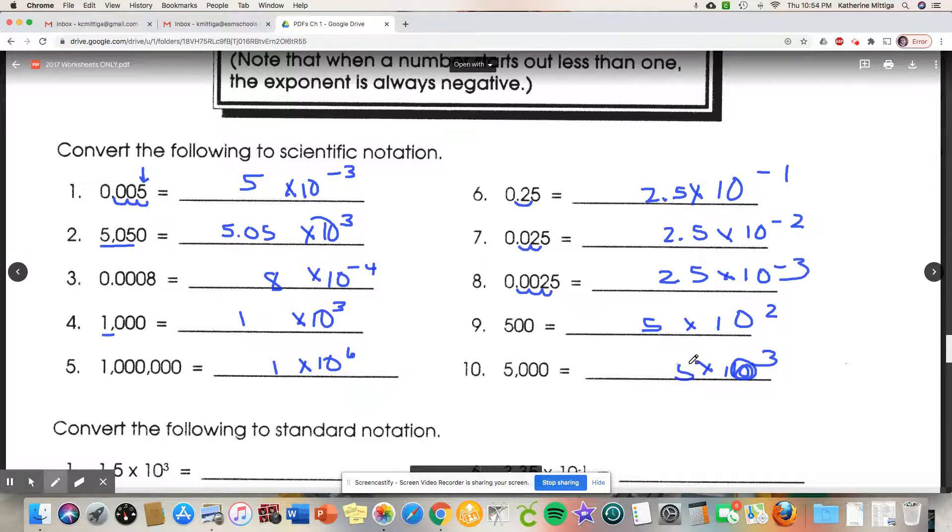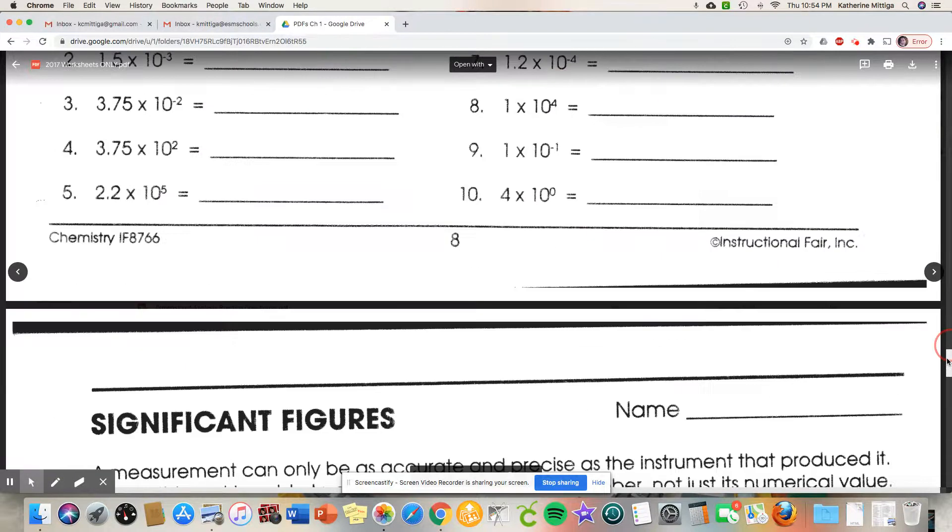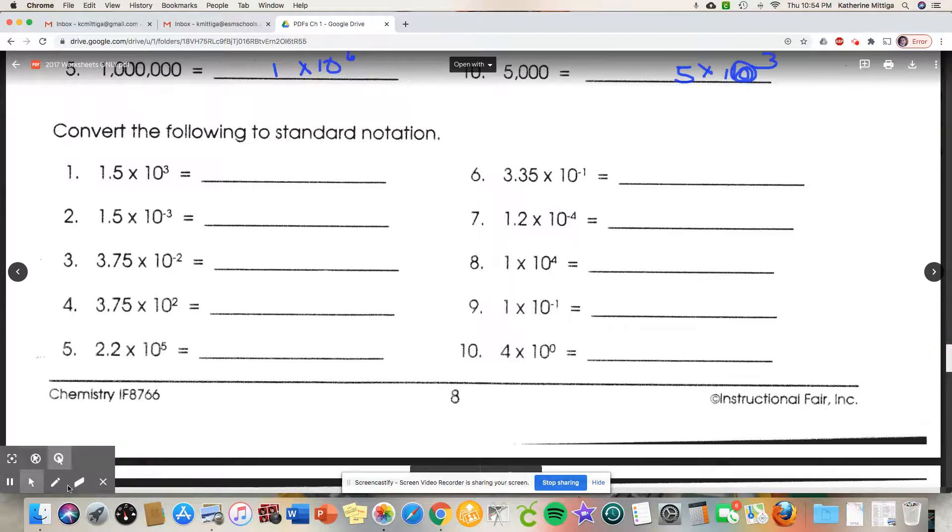All right, now bottom half: convert to standard notation. So you start where the decimal place is and you move over. So here's my 1.5: one, two, three. How did I know to move to the left? Positive exponent. Exponent means number greater than one: fifteen hundred. Okay, this means we're going to move to the left. One, two, three, decimal place.